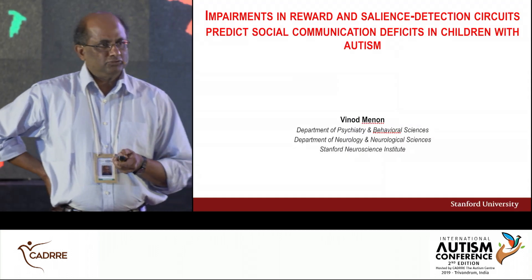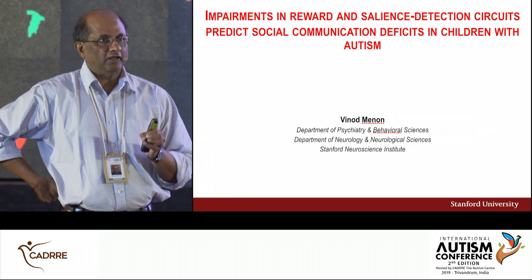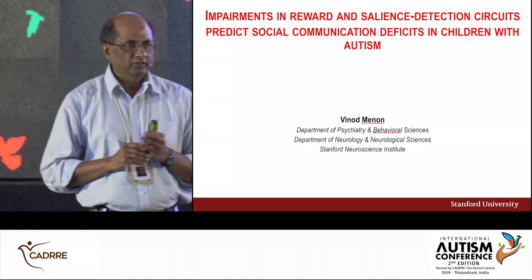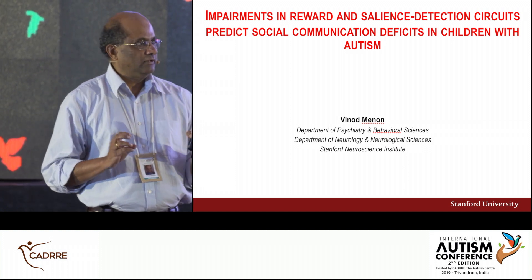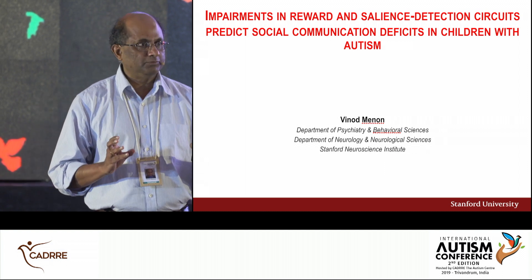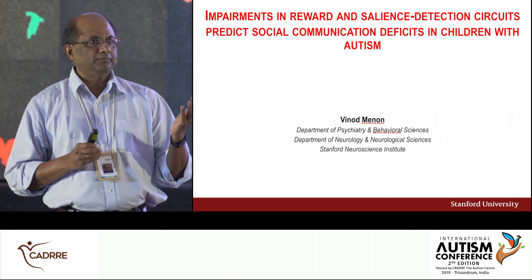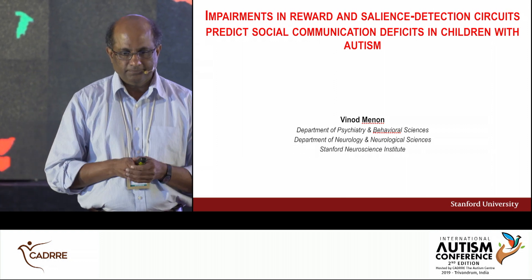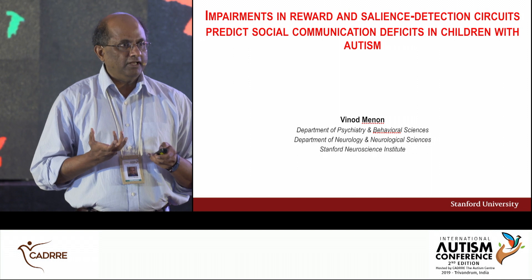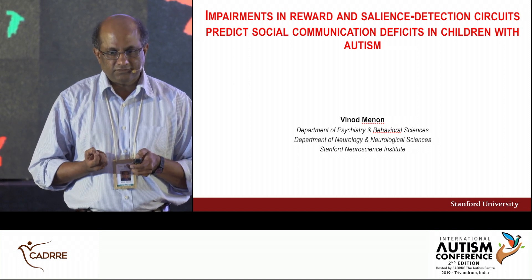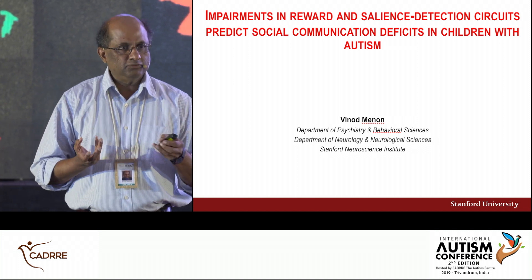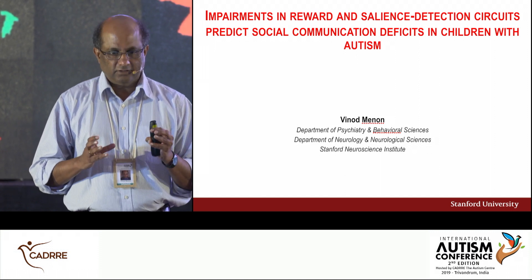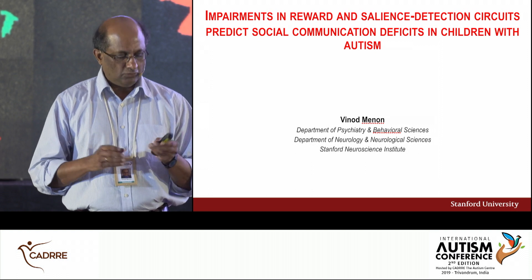Today I'm going to talk about social communication deficits and the brain circuits that underlie them. Social communication deficits are a hallmark of autism spectrum disorders, as you heard this morning — a center stage phenotypic feature in DSM-5 criteria. Our work is really focused on the reward and salience detection circuits, which I'll describe as I go along.